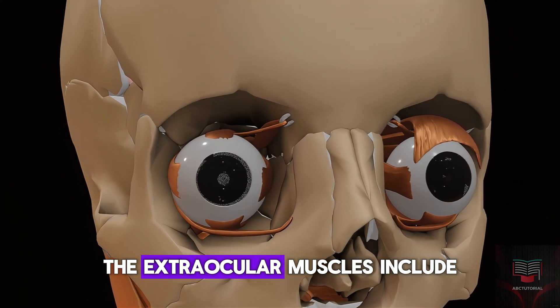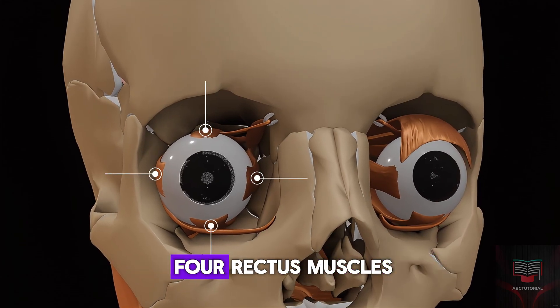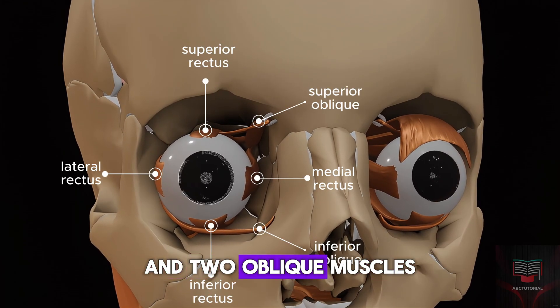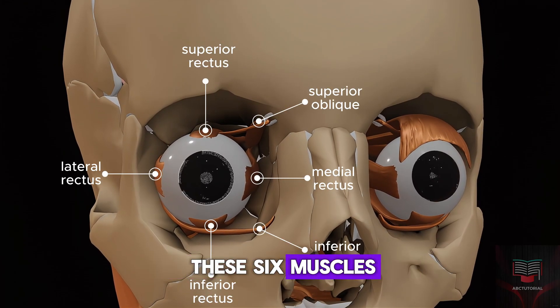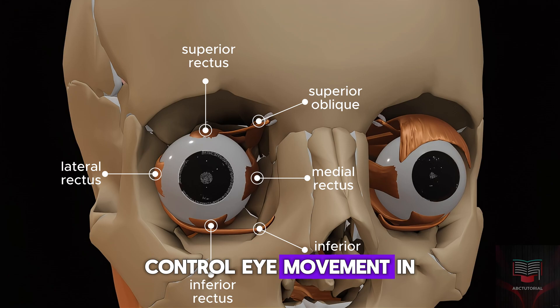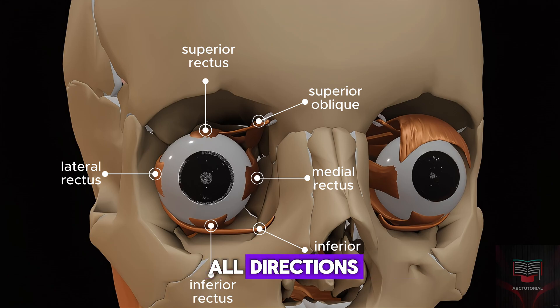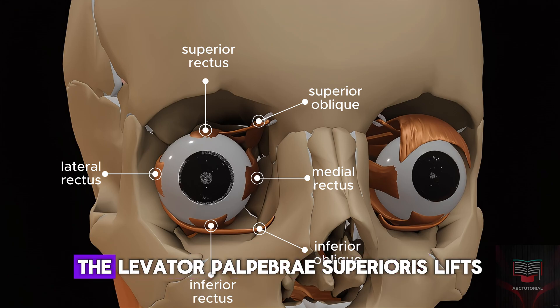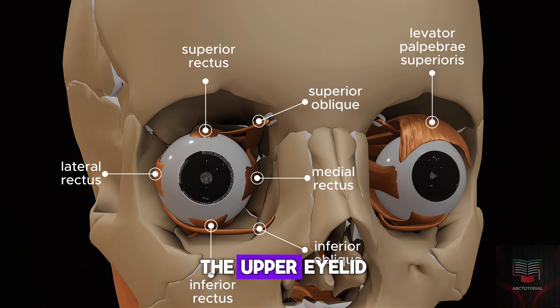The extraocular muscles include four rectus muscles and two oblique muscles. These six muscles control eye movement in all directions, while an additional muscle, the levator palpebrae superioris, lifts the upper eyelid.